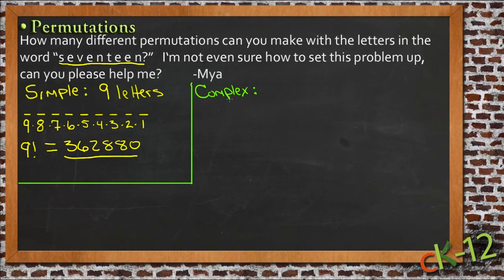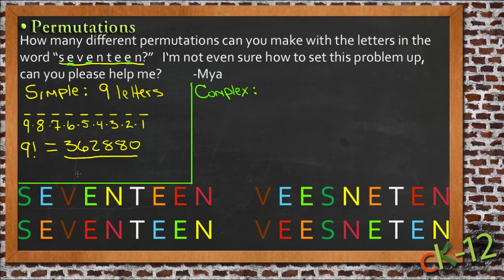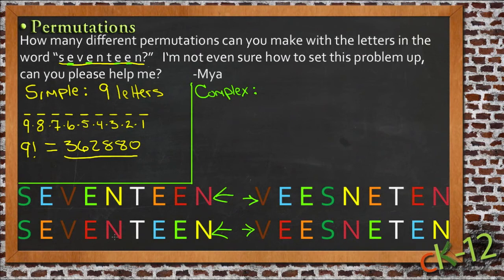The more complex answer takes into account the fact that there are multiple instances of some letters. For instance, there are four e's. I can spell 'seventeen' in a number of different ways — here on top and right down here directly below it is the same word, just like 'netman,' which I obviously made up, is the same on top and the same on the bottom. Both examples show that there are different ways to write the same word.